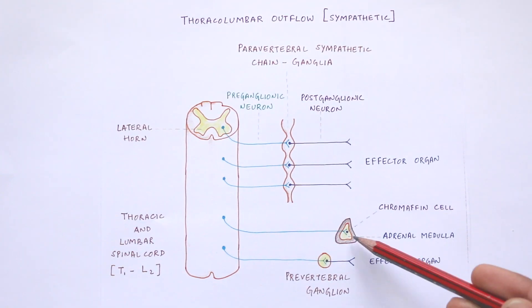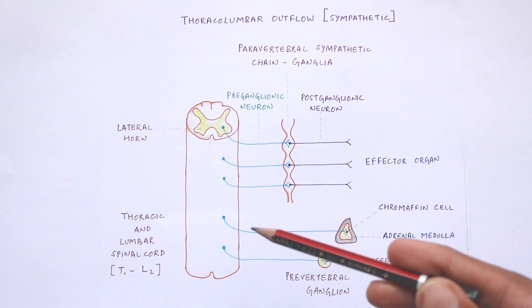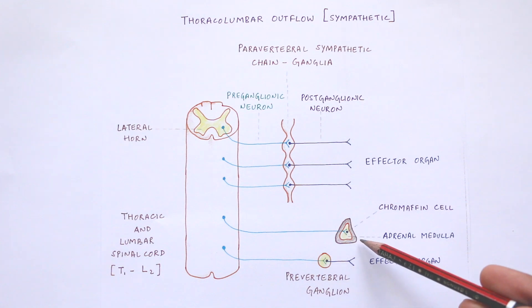We have so far assumed that all of the autonomic nervous system functions on a two-neuron system, but like any good rule, this one has an exception. The adrenal medulla is a part of the sympathetic nervous system and functions as a modified ganglion. The fibers innervating the adrenal medulla result in the release of adrenaline directly into the blood. There are no postganglionic fibers in this series.